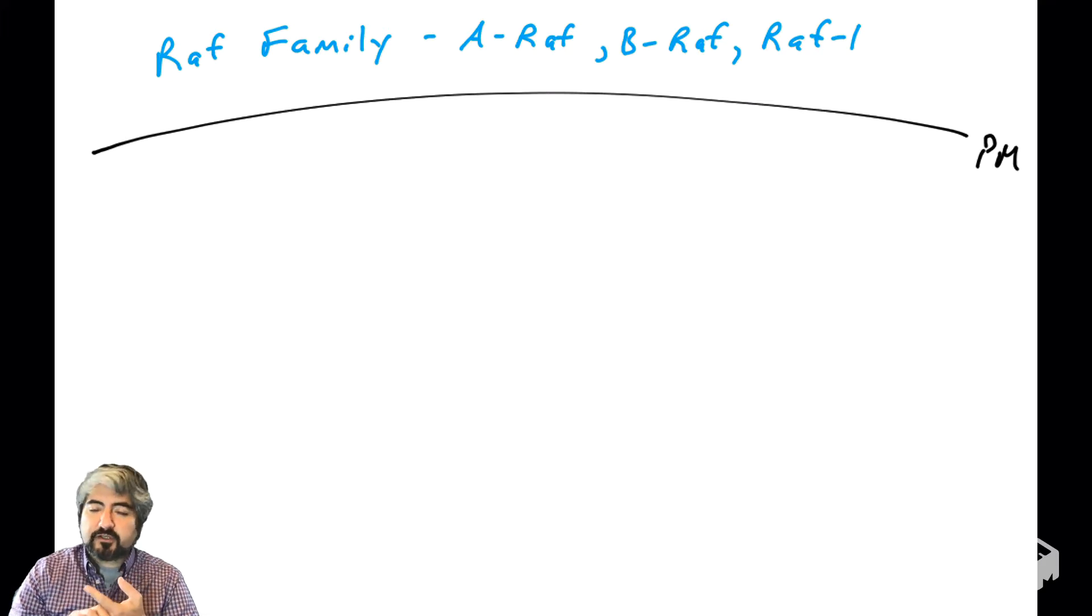There are multiple versions of RAF genes that our cells have. Some cells express ARAF, some cells express BRAF, some cells express RAF1. We're just going to talk about RAF in general. They more or less all work the same. It can be a little more complex, but in general, what we're going to talk about applies more or less to all the RAF family members.